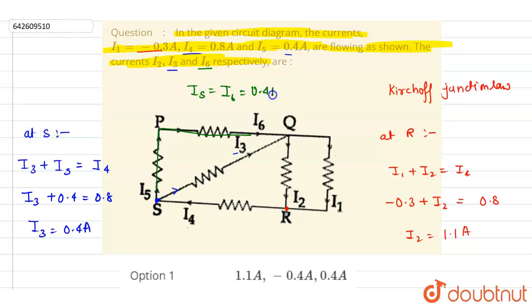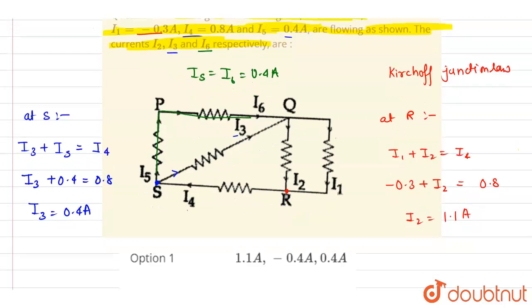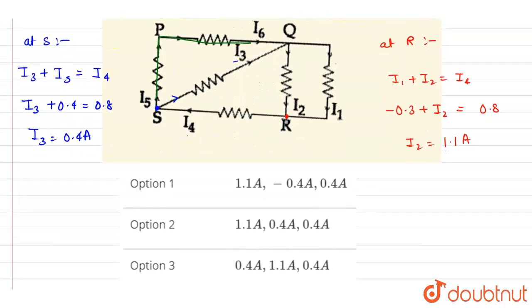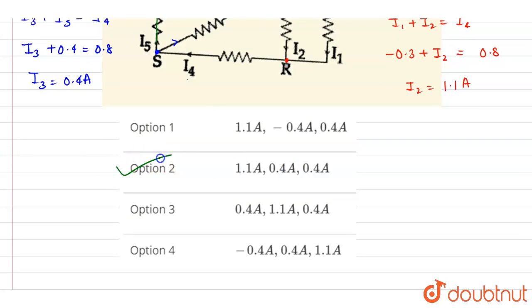It is equal to 0.4 ampere. That's it. Now we will write down 1.1, 0.4, and 0.4, so option is B.